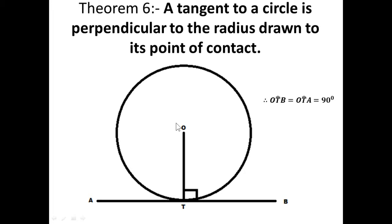Today we are still on circle geometry, and today's theorem — which you can see on the screen — states that a tangent to a circle is perpendicular to the radius drawn to its point of contact.